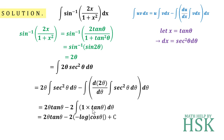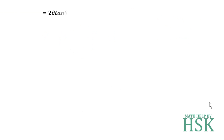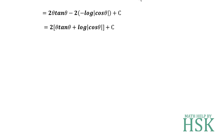The integration of tan θ equals −log(cos θ). So I get 2θ tan θ minus 2 × (−log(cos θ)) + c. Solving further, taking 2 as common and the double negative becoming positive, I can write this as 2(θ tan θ + log(cos θ)) + c.